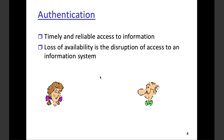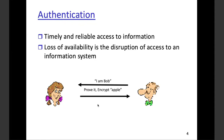Authentication makes sure the person I am talking to is the right person, or the person who is trying to access the system is the right person. For example: there is a communication between Alice and Bob. Bob says 'I'm Bob.' Alice says 'Prove it and encrypt Apple.' Bob knows the system.